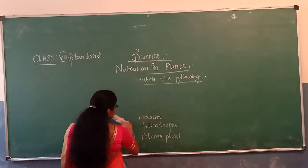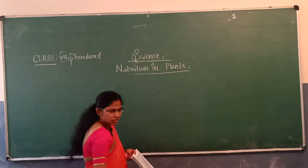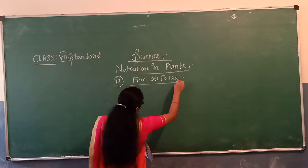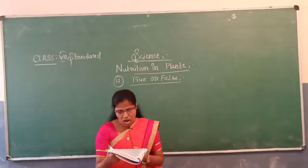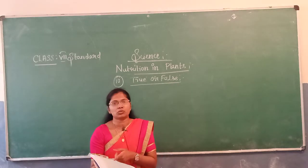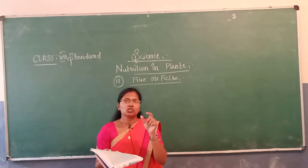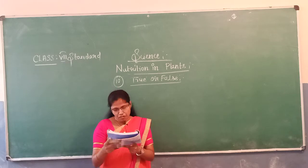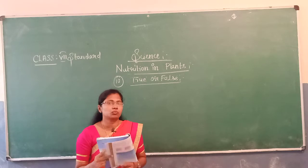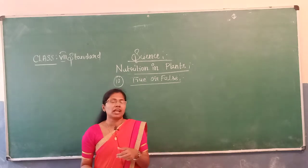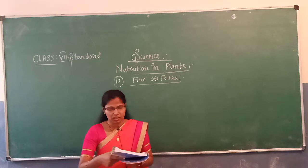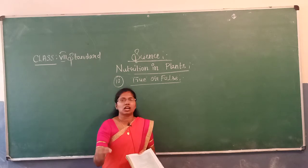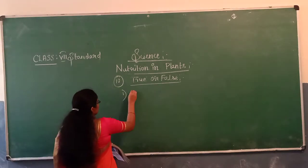Next we move to the tenth main — True or False. Mark T if the statement is true, and put a right mark if it is false. The first statement: carbon dioxide is released during photosynthesis. During photosynthesis, plants take in carbon dioxide and release oxygen — they do not release carbon dioxide. So this statement is false.